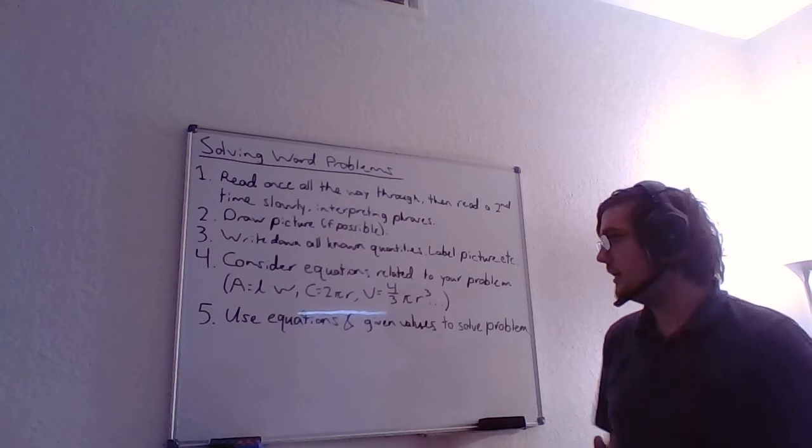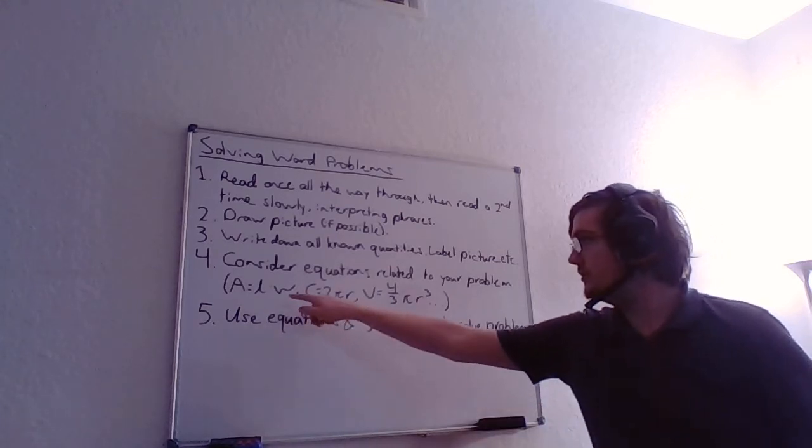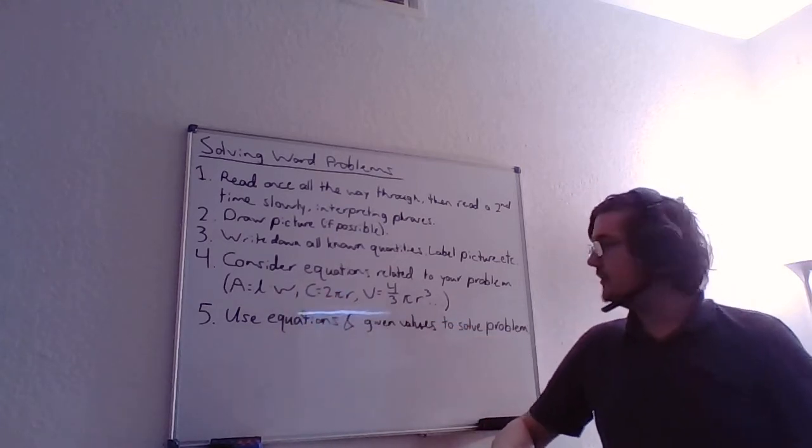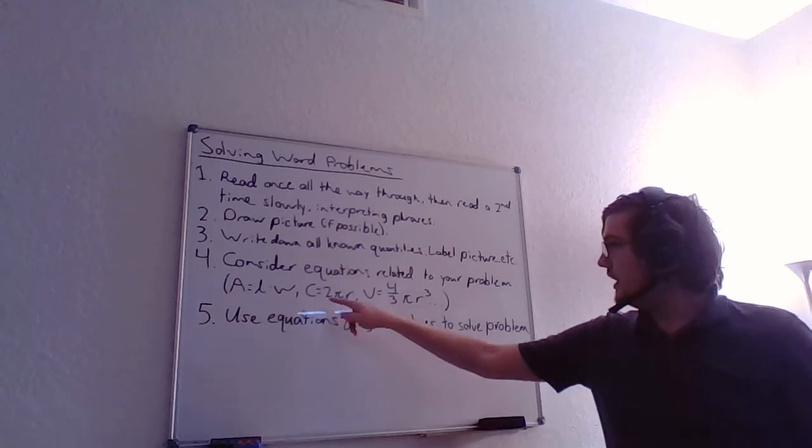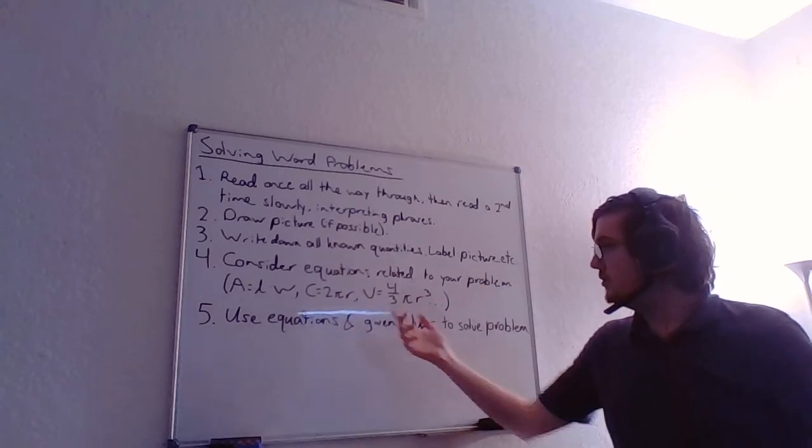Well the area of a rectangle is the length times the width, so you might need this formula. Maybe you're talking about the circumference of a circle, that's equal to 2π times the radius, so you might need that equation.